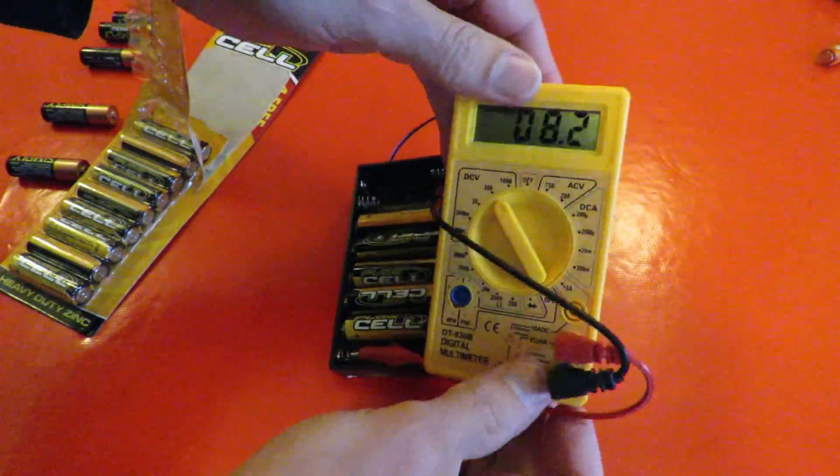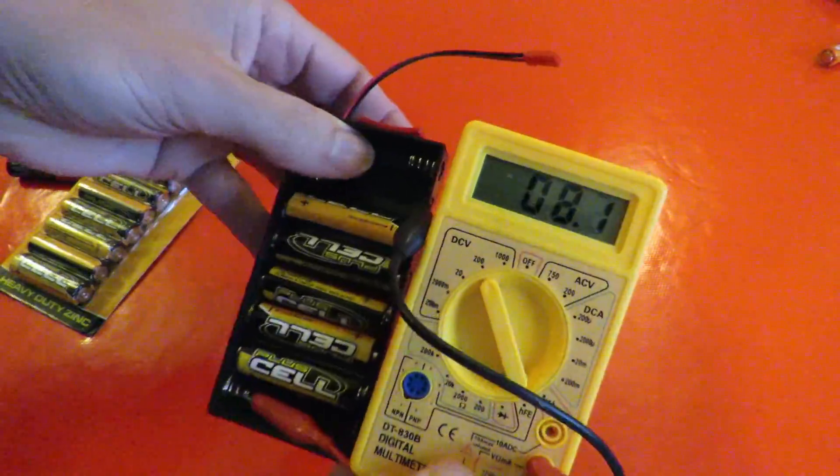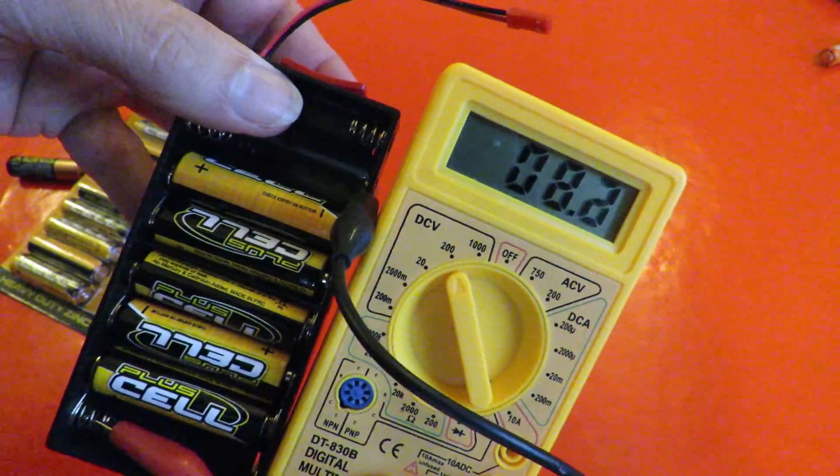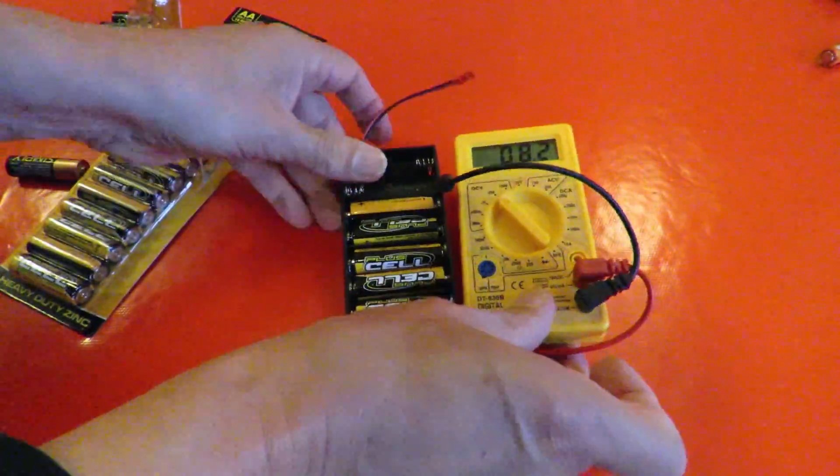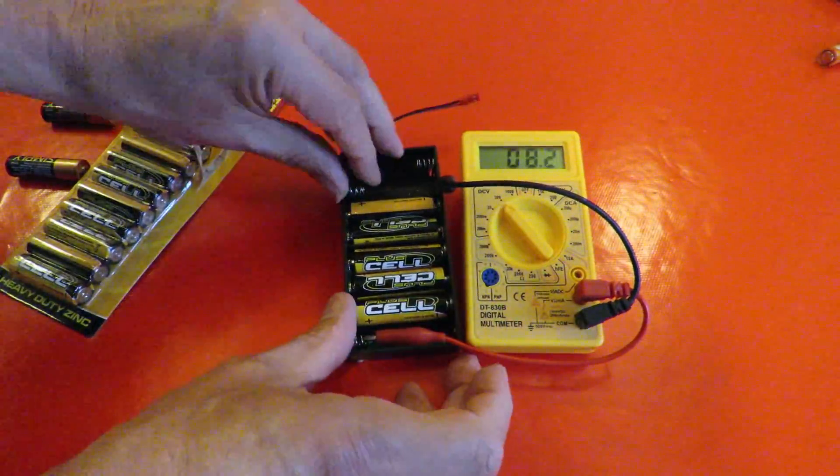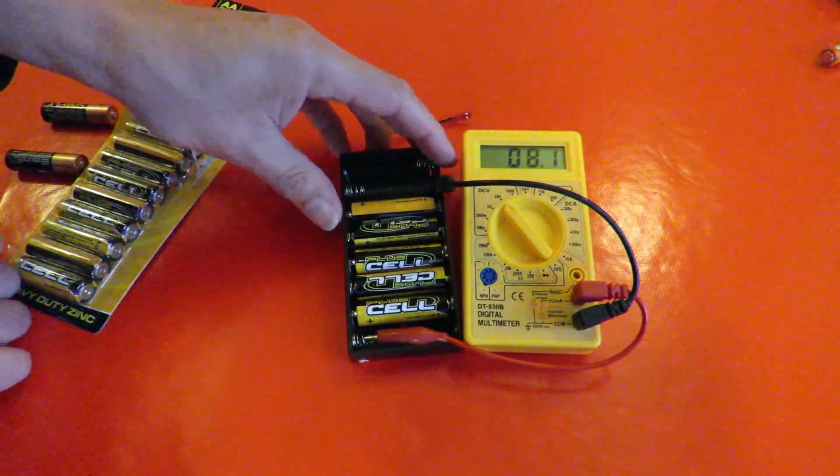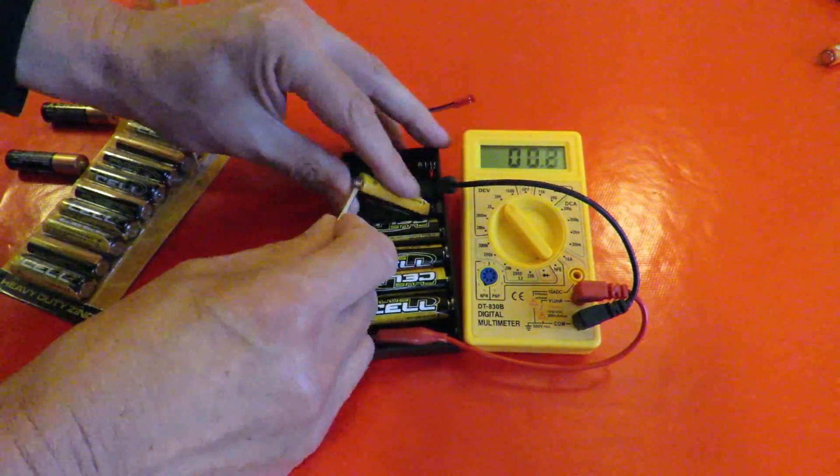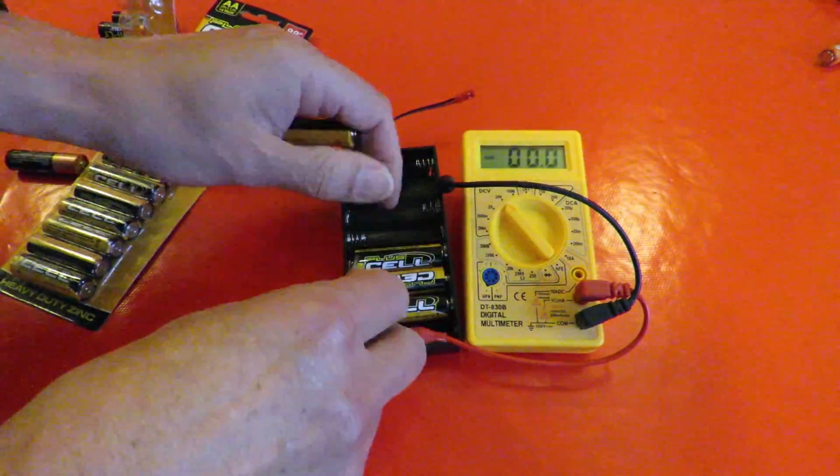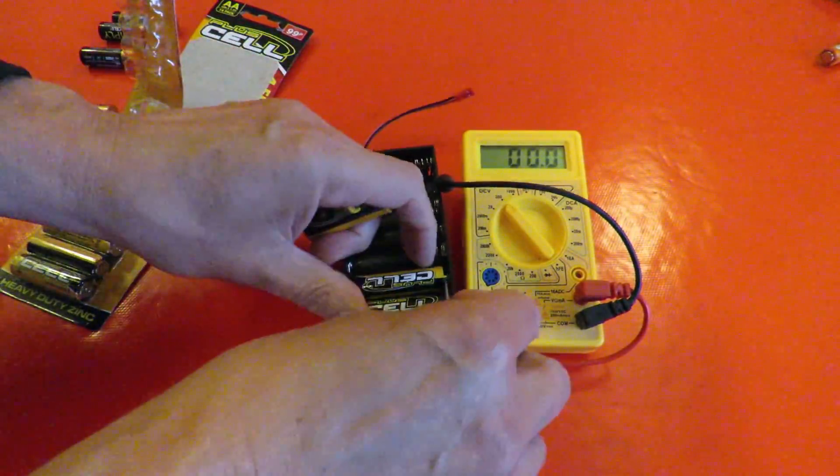Okay so that's our five one and a half volt batteries which should be giving us seven and a half volts according to what everybody thinks of AA batteries.